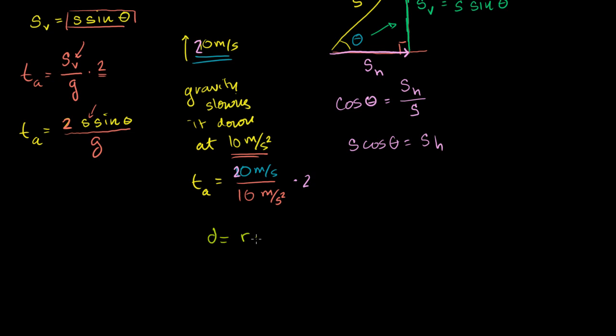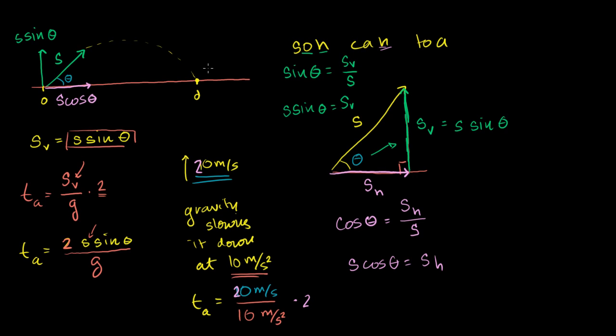Distance is equal to rate times time. Now, we're talking about the horizontal distance. So our distance is going to be equal to our rate in the horizontal direction.